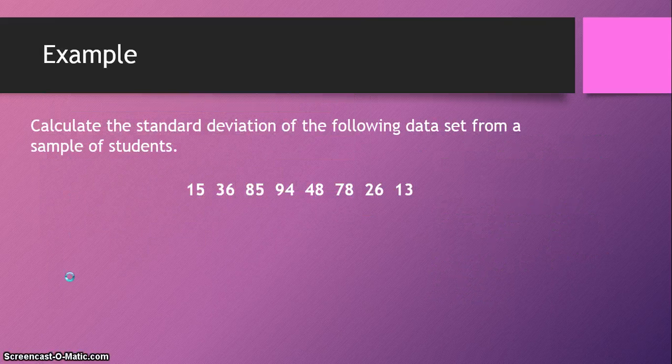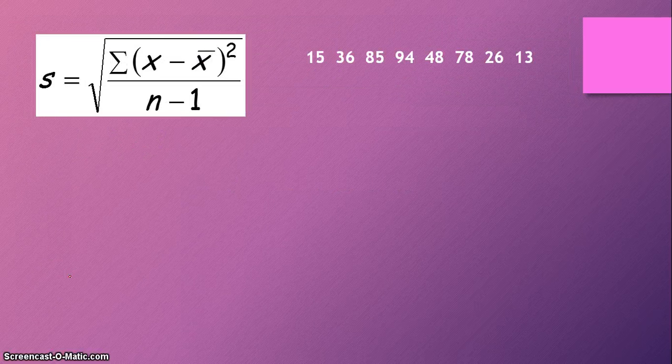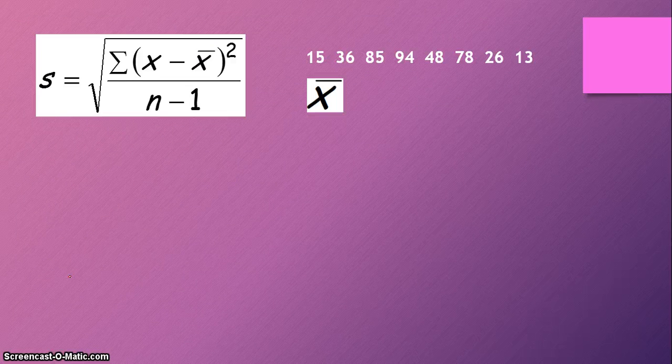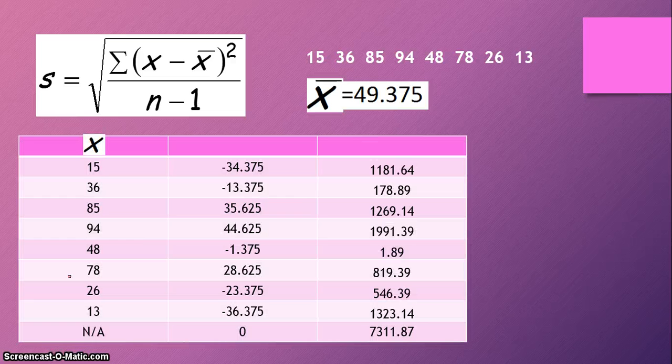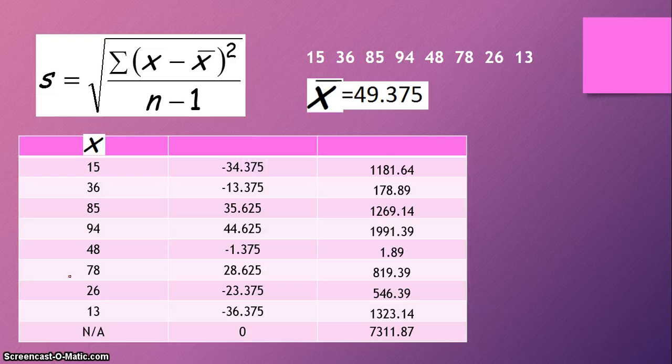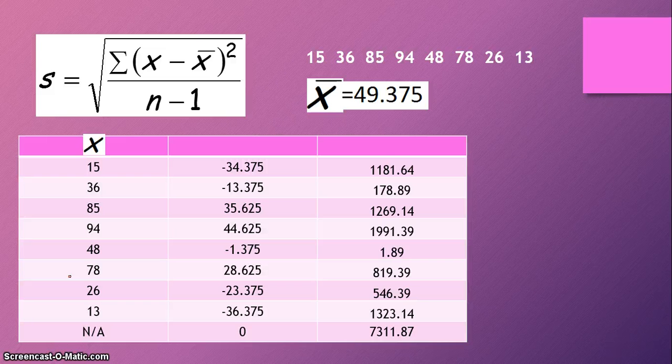So let's try it. Let's calculate the standard deviation of this data set. There's the formula again, and there's our data set. And I went ahead and calculated your x-bar, which is your mean of this data set. And it's 49.375. Alright, so I have this handy table with all of my calculations. And I'm going to explain how I got to each column and show you what it all means.